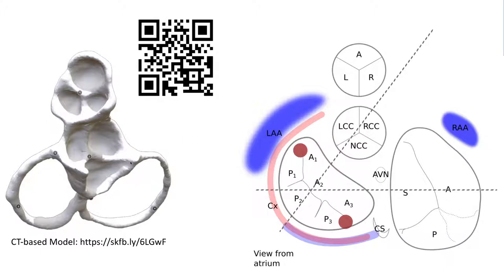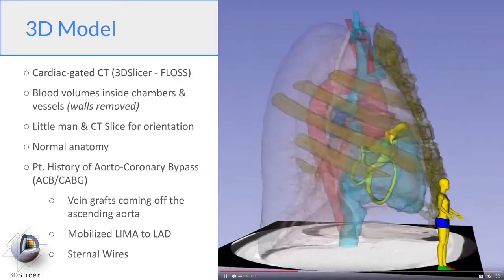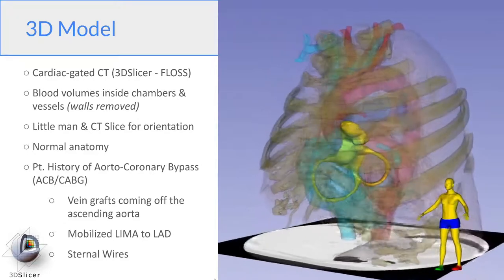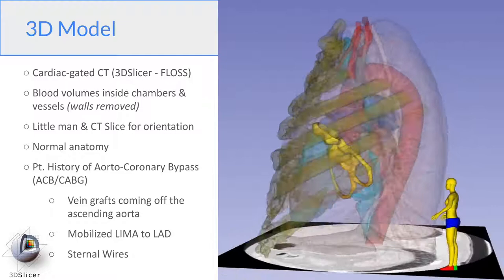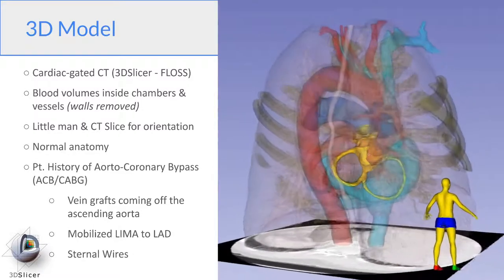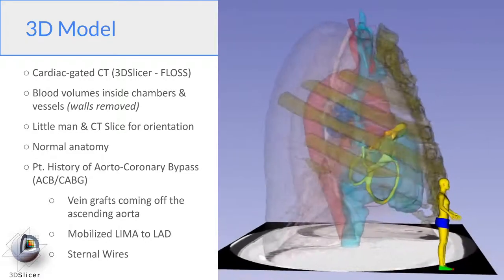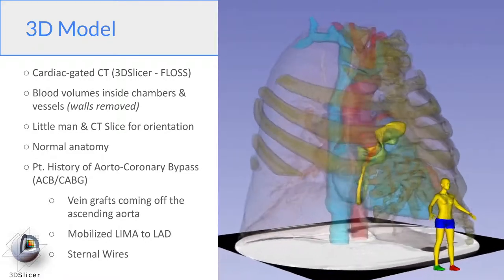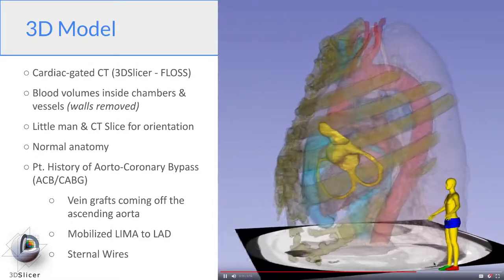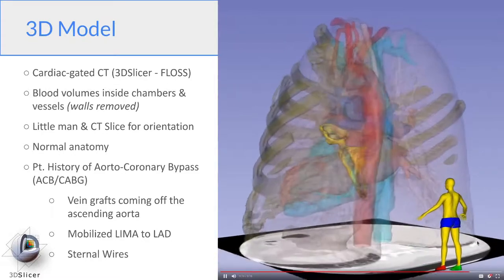On the left here we have the 3D CT-based model of the heart base. So now we're going to leap off the flat page into three-dimensional space. We're going to be using this cardiac gated CT-based model. What's shown here are the blood volumes of the heart chambers. For orientation, we have this CT slice at the bottom that helps you orient. You can see the spine at the back. We also have this yellow man on the side.